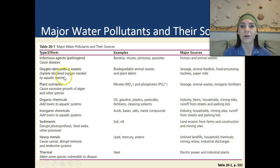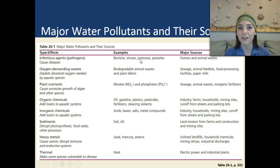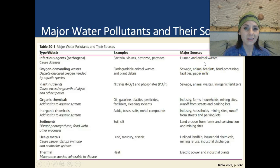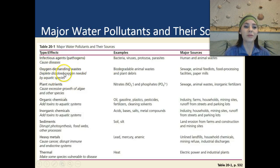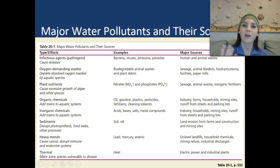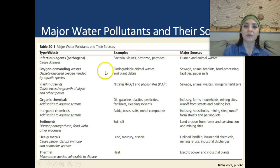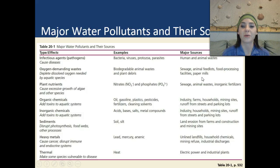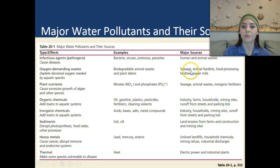We have infectious agents, which are called pathogens, and those cause diseases. Examples include bacteria, viruses, protozoa, and parasites — most of which come from human and other animal wastes or feces. We have oxygen-demanding wastes, which deplete dissolved oxygen needed by aquatic species, essentially suffocating fish in lakes, rivers, streams, and the oceans. Examples are biodegradable animal wastes and plant debris. The major sources of oxygen-demanding wastes are sewage, animal feedlots, food processing facilities, and paper mills.